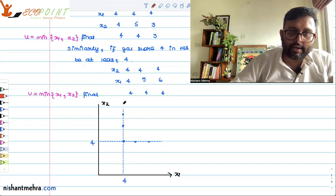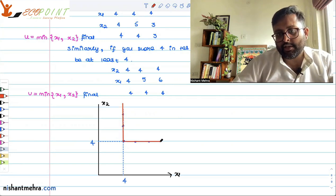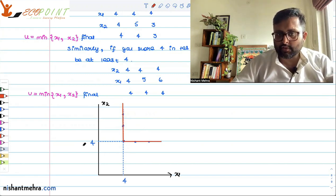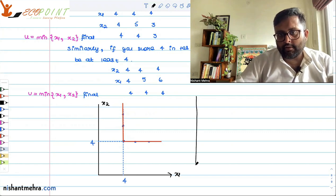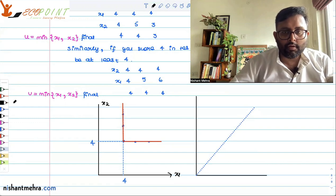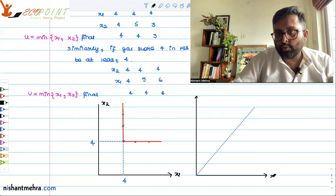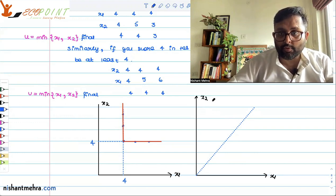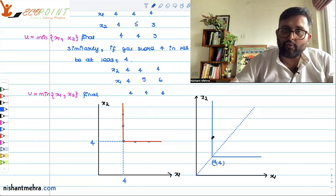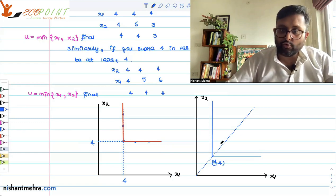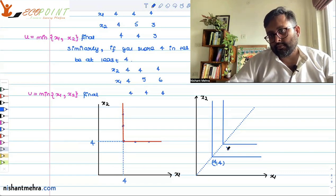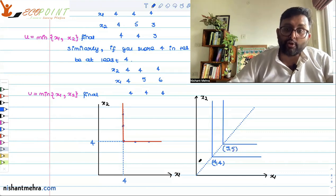So the idea is that for these kinds of preferences, when your utility function is given by u = min(x1, x2), you have L-shaped indifference curves. If I want my score to increase, I need to increase the minimum score on both tests. Sitting at 4-4, if I want my score to increase to 5, I should be getting at least 5 in both tests — only then will my utility increase.